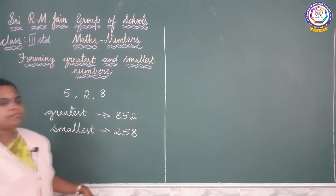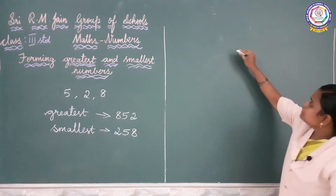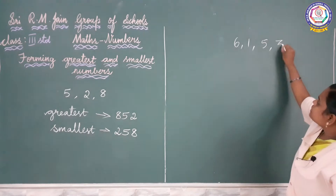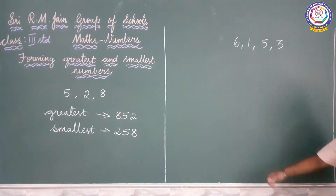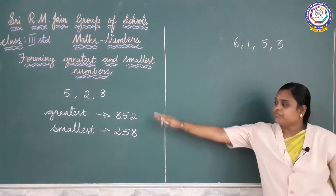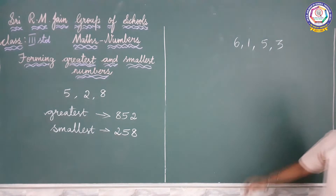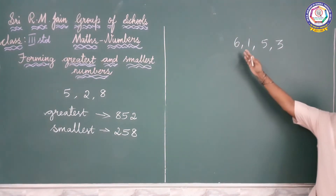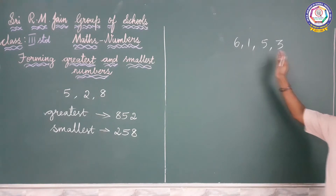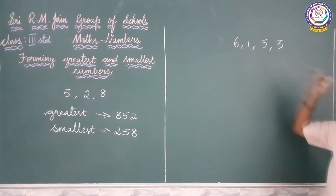So let us see one more example using 4 numbers — 6, 1, 5, 3. So we have given 4 digits. From these digits we are finding the greatest number and then the smallest number. We are going to find out the greatest 4-digit number and the smallest 4-digit number.